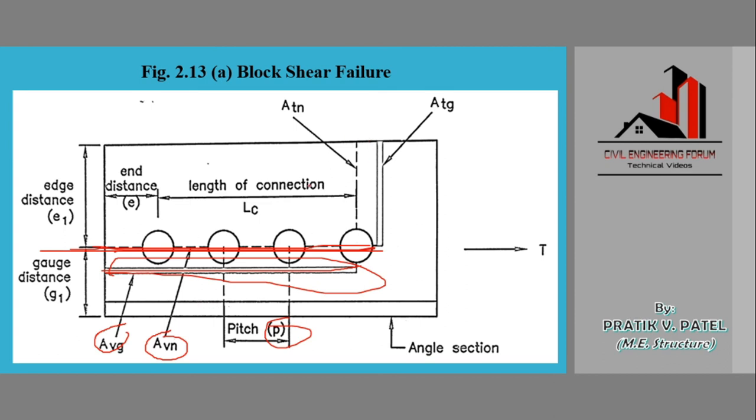Now talking about Atn. How can we identify whether the particular cross-sectional area is Avg or Atg? This basically depends on the line of action. If this is the line of action, then the cross-sectional area parallel to the line of action is Avg or Avn, and perpendicular is Atg and Atn.